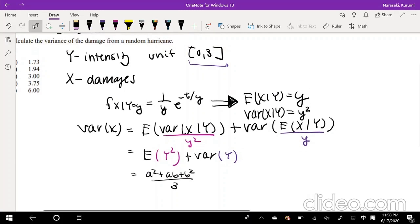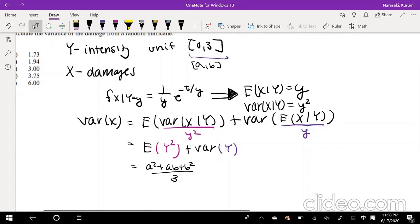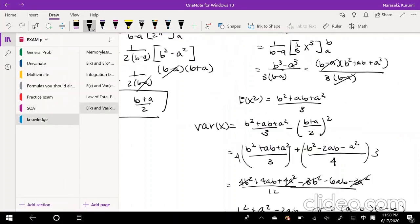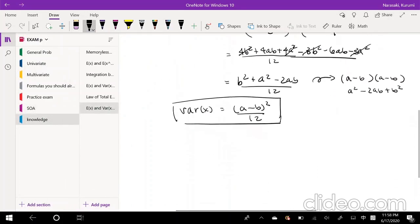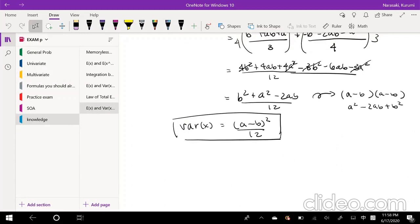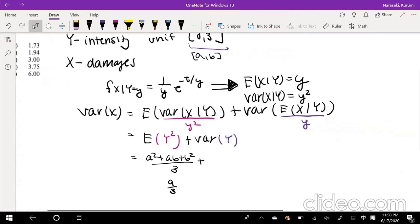Where a, for us, is 0, right? Because this is the same thing as 0, a comma b. So this is 0 plus ab, that's 0, plus b squared, that's 9 over 3. Plus the variance of y, which I also derived in my last video. Variance of x is a minus b the whole thing squared over 12. And again, a in our case is 0, negative 3 squared is 9, 9 over 12.